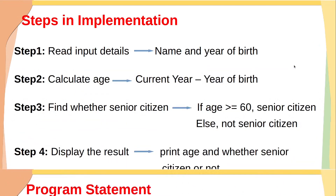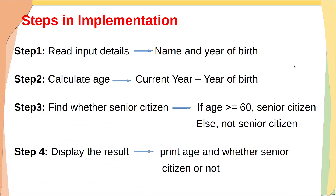This program can be implemented in four simple steps. In the first step, we read input details: name and year of birth. In the second step, we calculate age using the formula: current year minus year of birth. In the third step, we use an if-else block — if age is greater than or equal to 60, the person is a senior citizen; else, not. In the fourth step, we display the result.